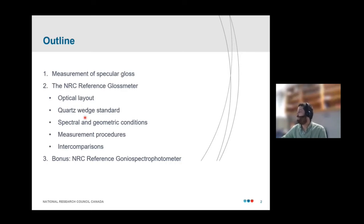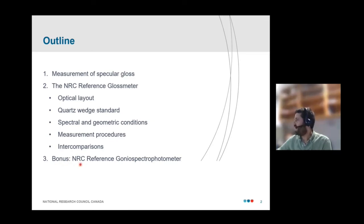So my outline is shown here. I'll start by giving a brief overview of the measurement of specular gloss. There'll be a fair amount of overlap with what Gail and Clarence have already said, but we can go over that again so that it's fresh for when we move on to the instrument. The actual instrument itself, I'll tell you a bit about its optical layout. I'll briefly describe the quartz wedge standards that we use. I'll tell you a bit about how we aim to control the various spectral and geometric conditions that can impact a gloss measurement. I'll tell you a bit about what our measurement procedures look like for a standard calibration. And then I'll go over a few of the intercomparisons that have been done over the years in order to validate the performance of this instrument. And then finally, I'll finish with a description of another instrument we have very briefly, a reference goniospectrophotometer. This instrument is also capable of measuring specular gloss.